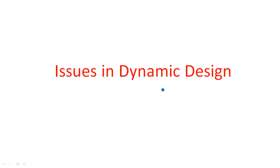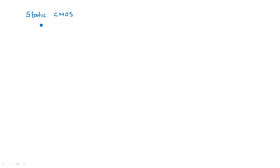In this video you are going to learn about the various issues we encounter when using dynamic CMOS design. In the previous videos I explained the differences between static CMOS design and dynamic CMOS design. In static CMOS circuit design the inputs are constant until the user intentionally changes them, whereas in dynamic CMOS design the input consists of a clock signal that continuously changes with respect to time.